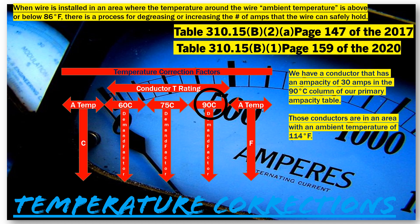First, we make sure we select from the 90°C column of the correction table, because our conductor was from the 90°C column of the ampacity table. We slide down until we find 114°F, then slide over to the left and select our demand factor, which in this case is 0.82, or 82%. The math bears out like this: original ampacity (30A) multiplied by the demand factor (0.82) gives us a new allowable ampacity of 24.6 amps. So this wire that was once good for 30 amps is now only good for 24.6 amps because of the temperature the wire is being run in.